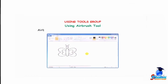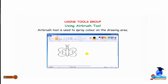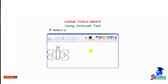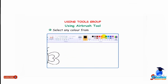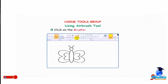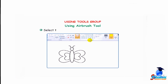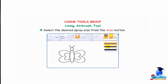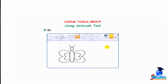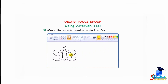The airbrush tool is used to spray color on the drawing area. Select any color from the colors group. Click on the brushes drop-down arrow and select the airbrush option. Select the desired spray size from the size button. Move the mouse pointer onto the drawing area and click the mouse button on the area where you want to spray the color.